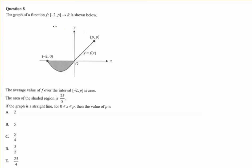So we're given some function, which is defined over this interval, and we're given some key information. We're told that the average value from here to here is 0. We know the area of this region, and we know that this is a straight line.